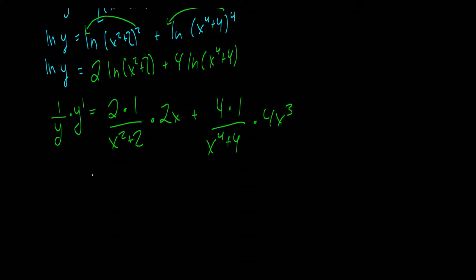Okay, simplify this a little bit. So we have y prime over y is equal to 4x over x squared plus 2 plus 16x cubed over x to the 4 plus 4. Again, we're just simplifying.